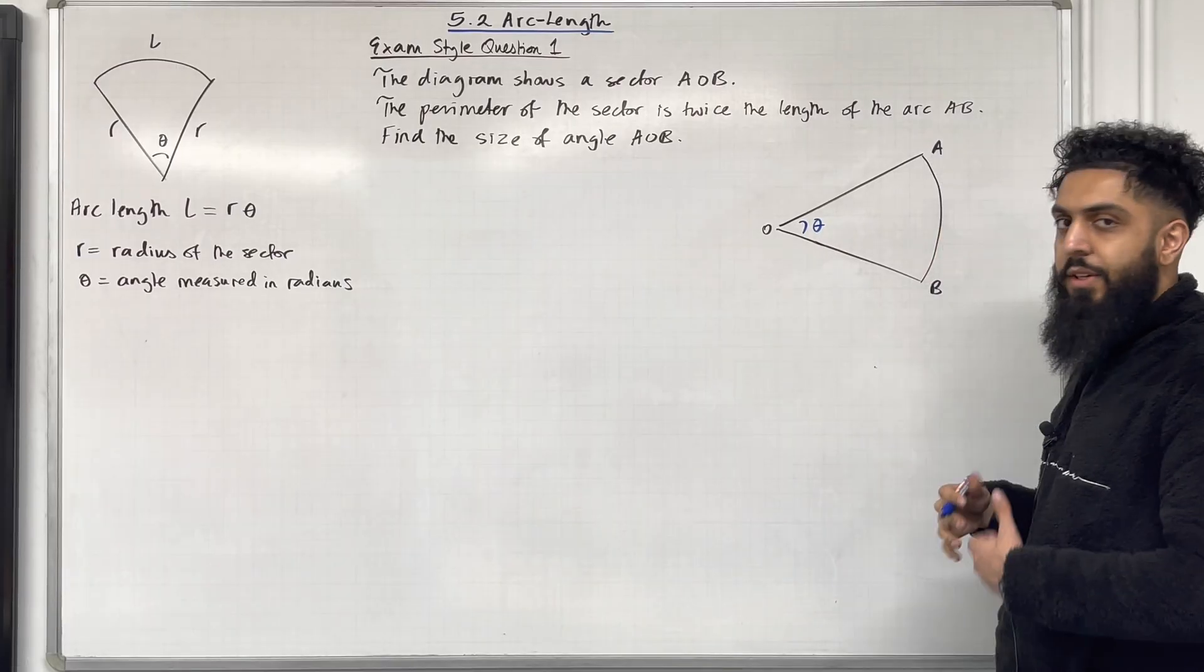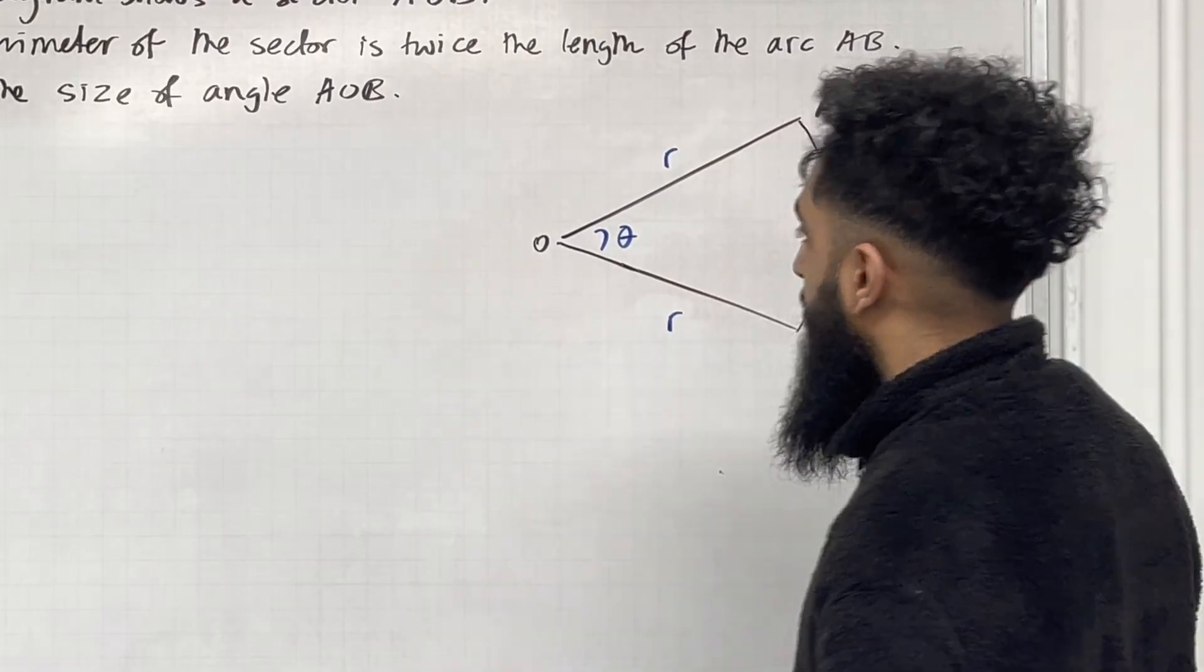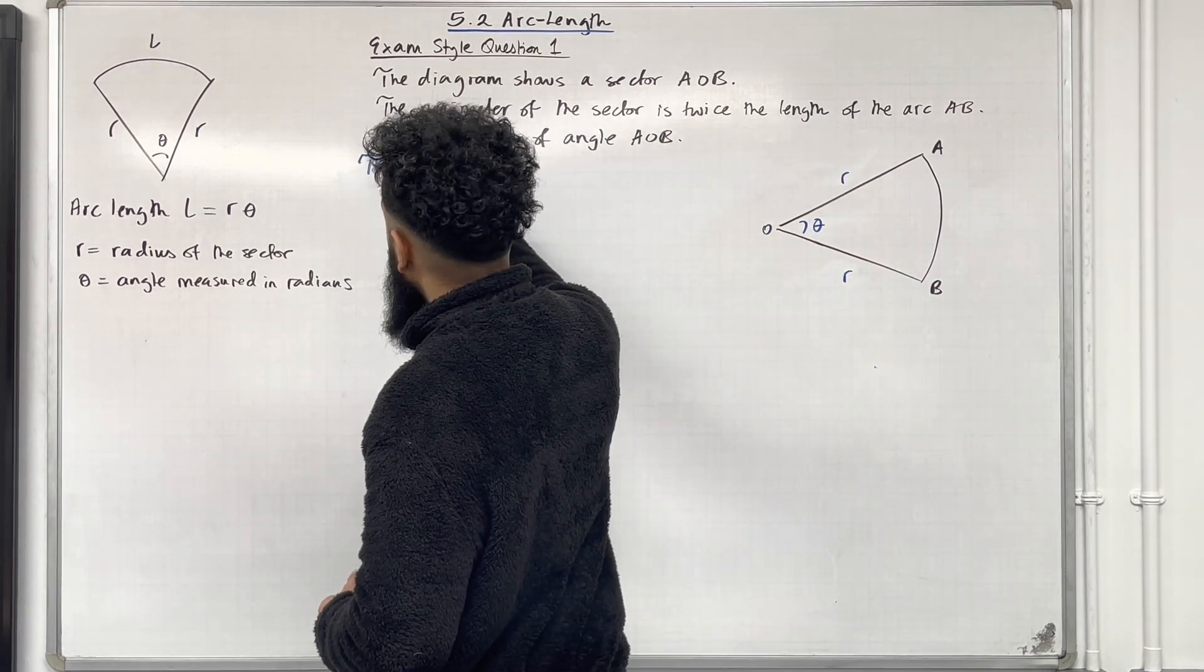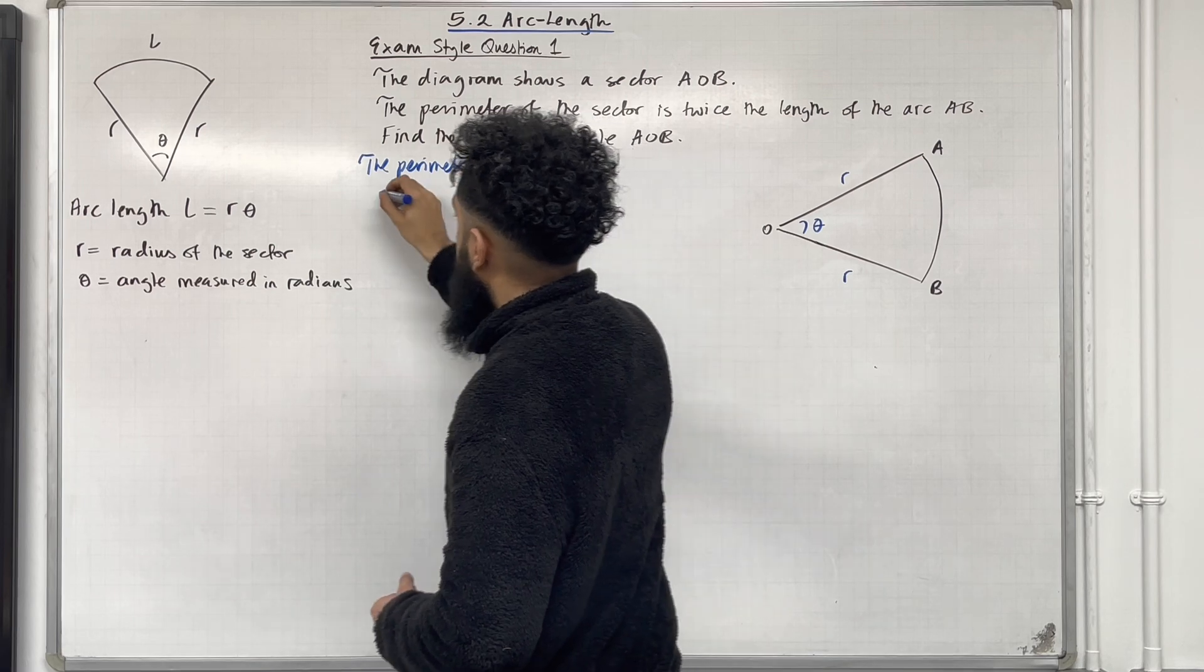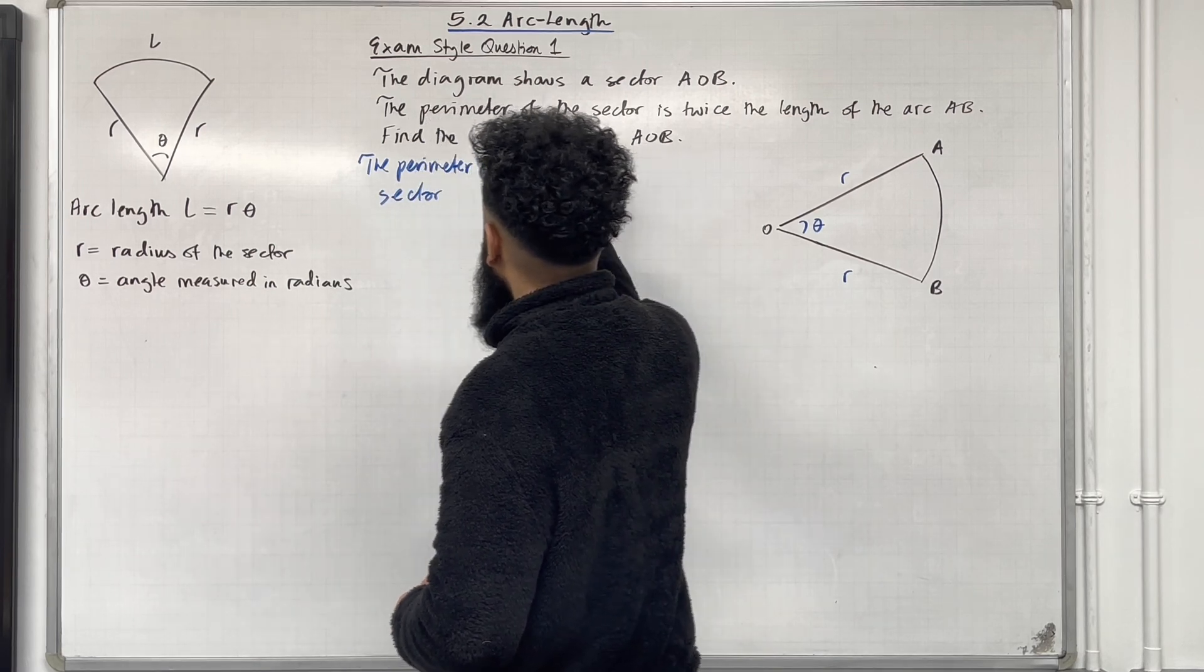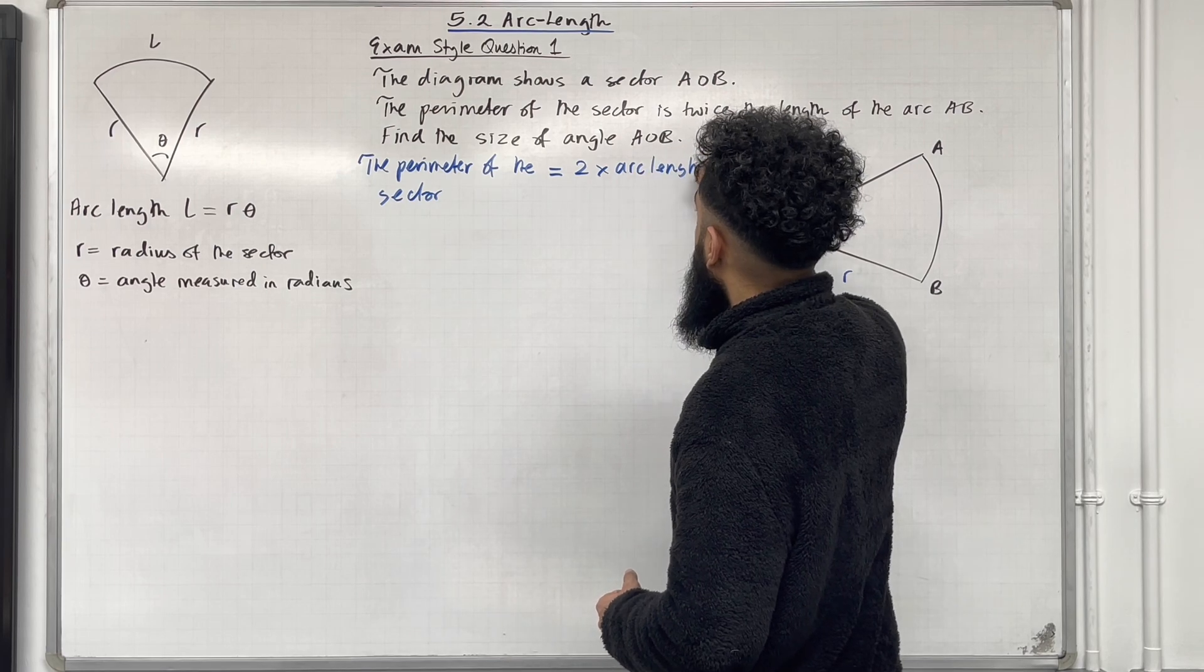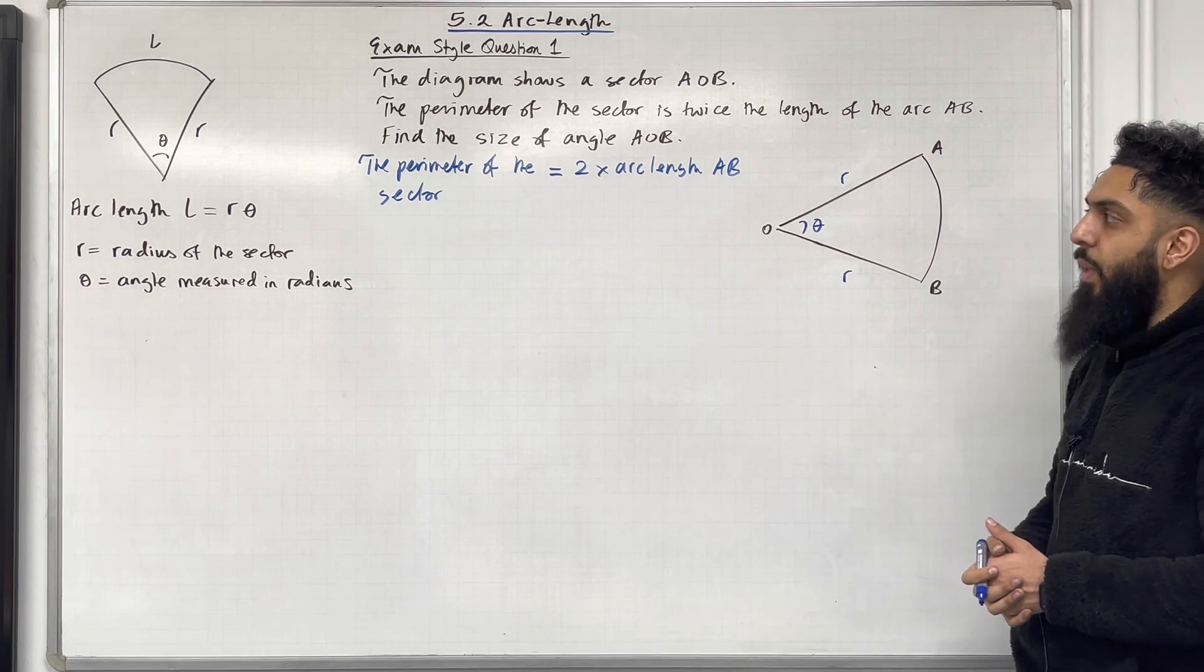And let's call the radius of the sector R. So we've got R over here and we've got R over here. From the question it says the perimeter of the sector is equal to twice the arc length AB. So we're going to use this information to generate an equation.